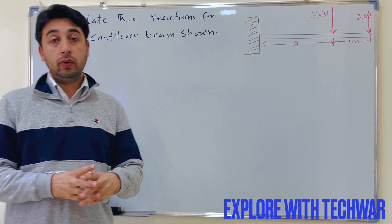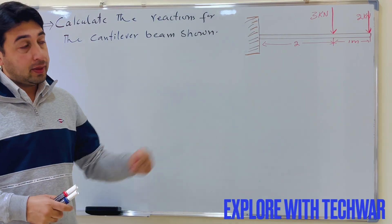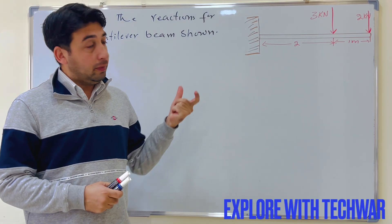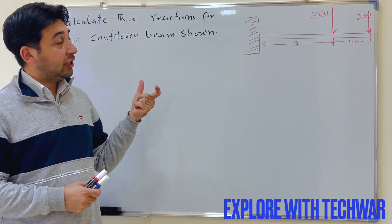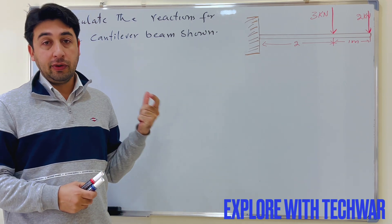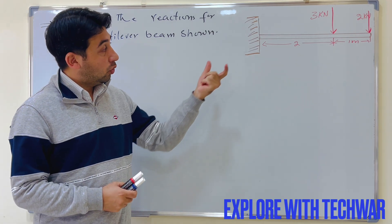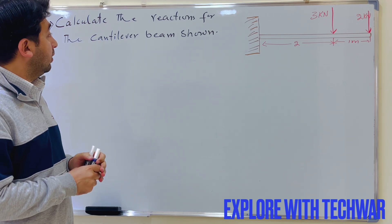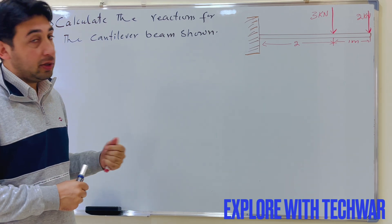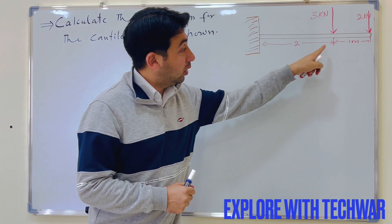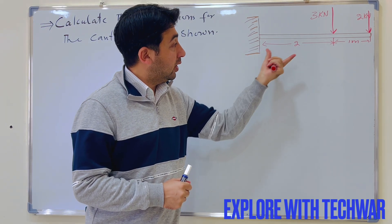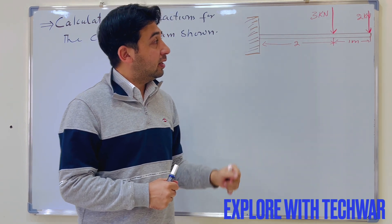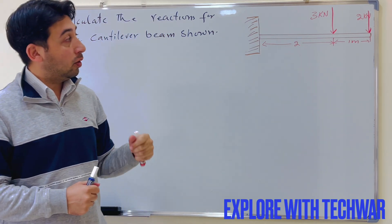Hello everyone, I hope everyone is doing well. In this video we will solve a problem in which we will find reactions on a cantilever beam. We have a problem: calculate the reaction for the cantilever beam shown in the figure. We have a cantilever beam with two forces acting on it: two kilo Newton and three kilo Newton.